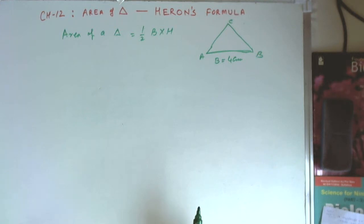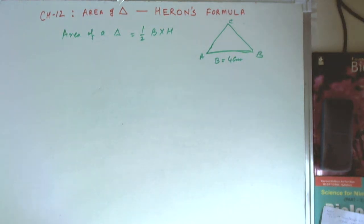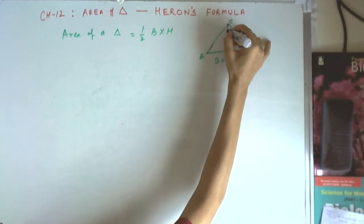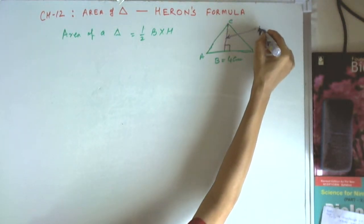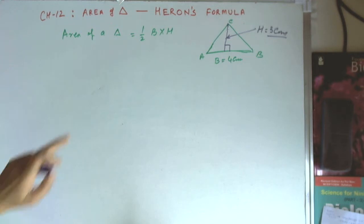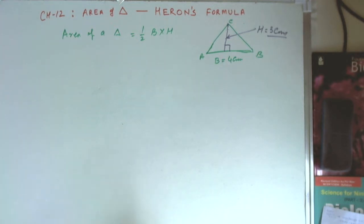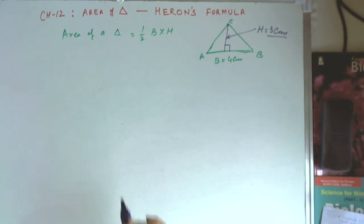That is always a challenge, because to measure the height we need to draw a perpendicular from point C onto the base, so this angle is 90°, and then measure it — say this height is equal to 3 cm. We can then calculate using half into base into height. But it is always a challenge that, for a given triangle, unless we draw the triangle to scale on a piece of paper and draw a perpendicular from point C and measure it, we have to do the construction to scale, measure it, and only then can we calculate the area.